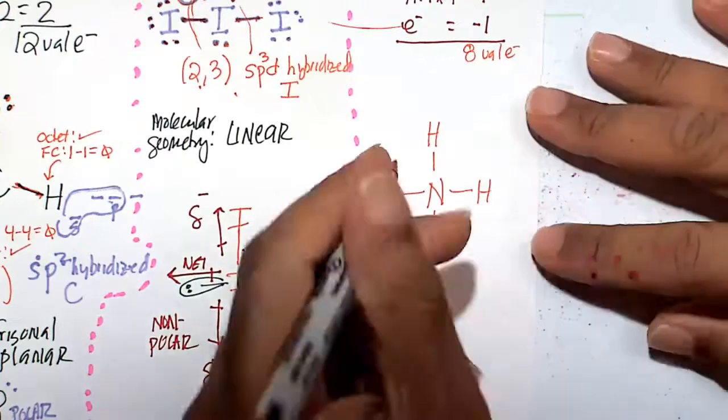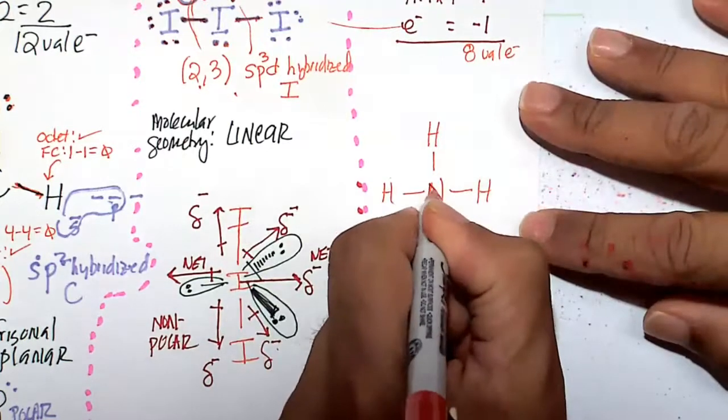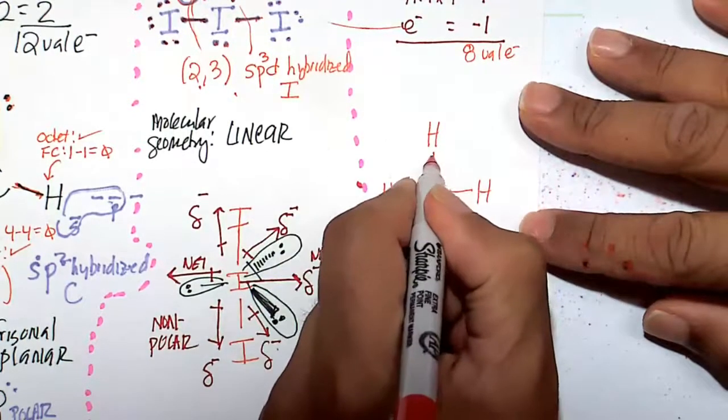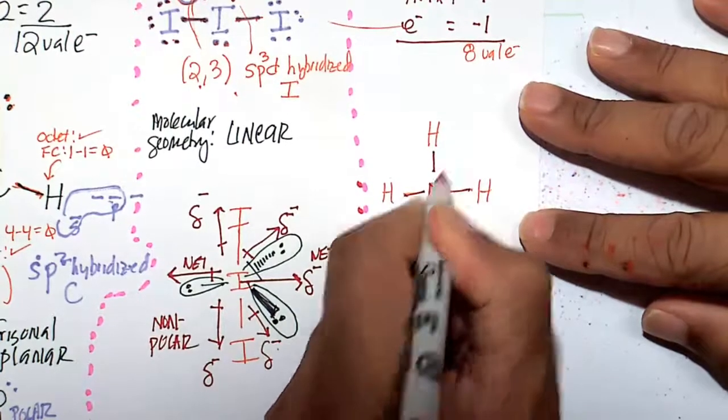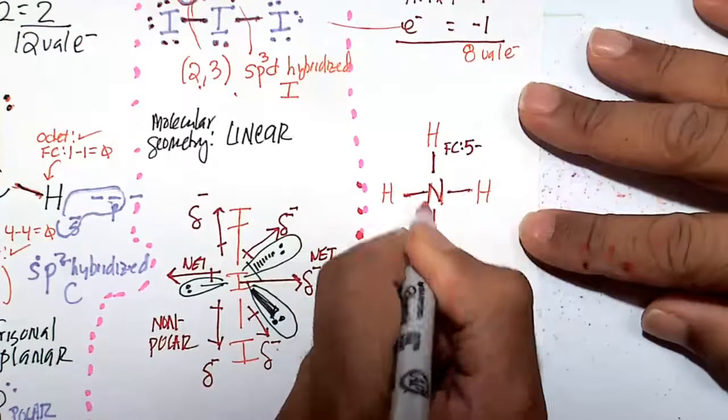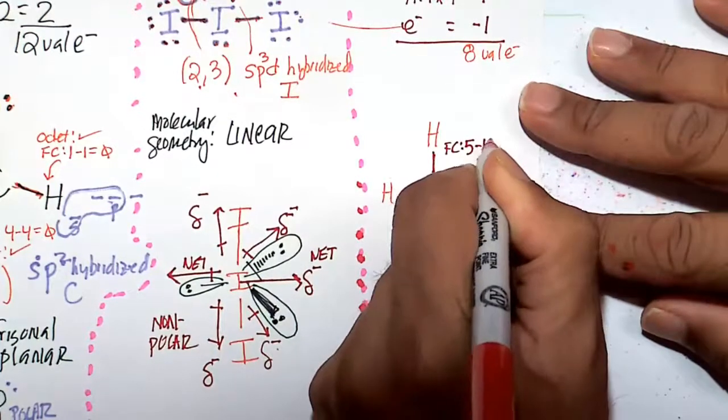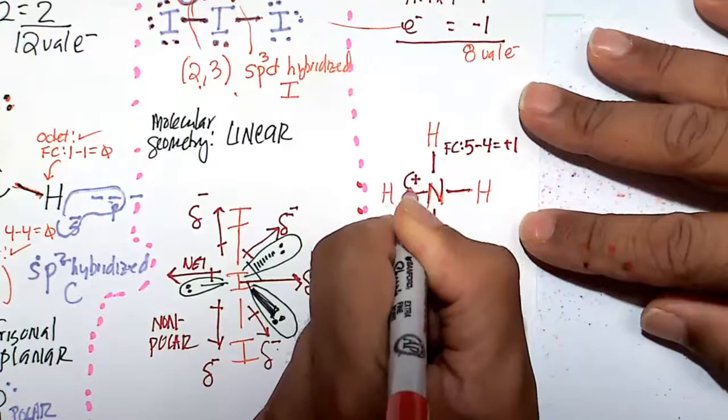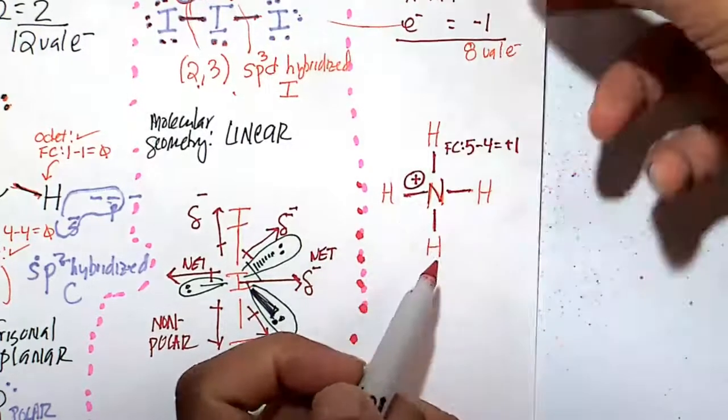Let's look at the formal charge of this nitrogen atom. It's our central atom. So nitrogen, 1, 2, 3, 4. Nitrogen is happy at 5. 1, 2, 3, 4. 5 minus 4 is plus 1. So this has a plus 1 formal charge on that nitrogen.